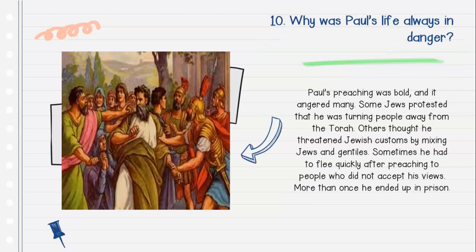Question number ten: Why was Paul's life always in danger? Paul's preaching was bold, and it angered many. Some Jews protested that he was turning people away from the Torah. Others thought he threatened Jewish customs by mixing Jews and Gentiles. Sometimes he had to flee quickly after preaching to people who did not accept his views. More than once he ended up in prison.